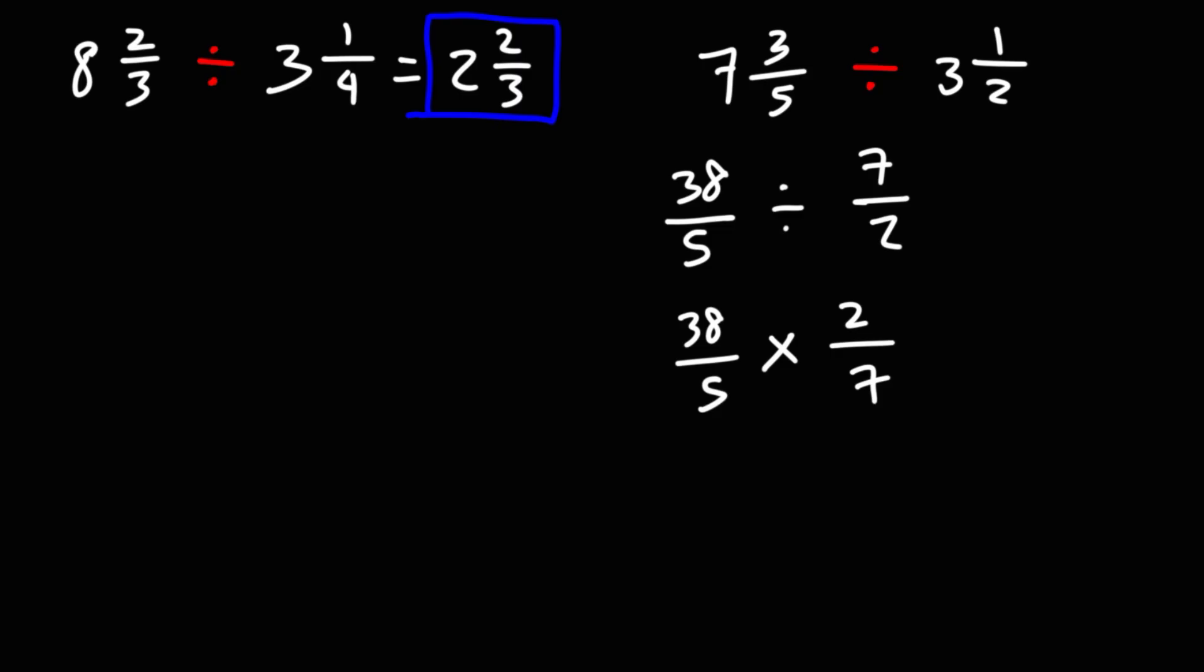Now we can't really simplify this problem. 7 doesn't go into 38, so there's really not much we could cancel. So we have to multiply across. 38 times 2 is 76. 5 times 7 is 35.